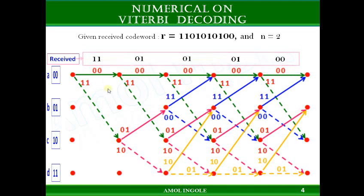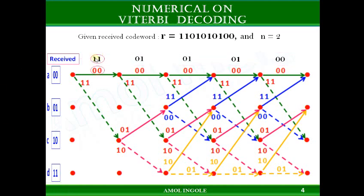Step 2 is finding the hamming distance and writing the path metric. The hamming distance between the first packet of the received codeword '11' and '00' is 2, and that 2 is written as the path metric in a box for this path. For the other path, the hamming distance between '11' and '11' is 0, so the path metric written in a box is 0.